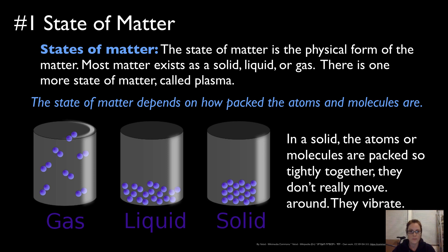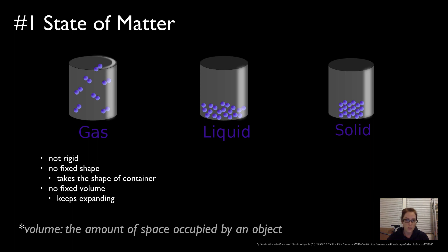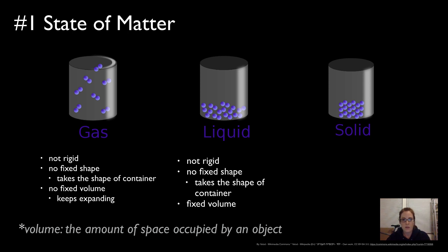Gases are not rigid — they don't have a fixed shape and will take the shape of any container, but with no container they just keep expanding. Volume is the amount of space occupied by an object, so the volume of a gas is not fixed. With a liquid, it's also not rigid and takes the shape of its container, but it has a fixed volume — you can't expand the liquid to create more. In a solid, it's rigid, has a fixed shape, and has a fixed volume.